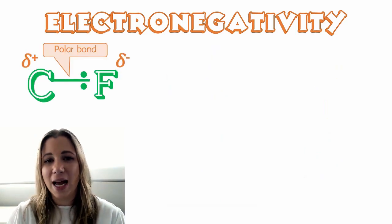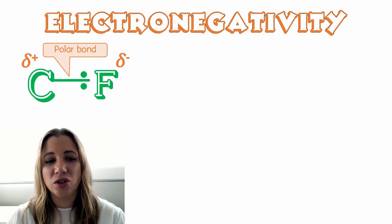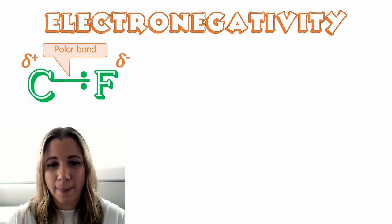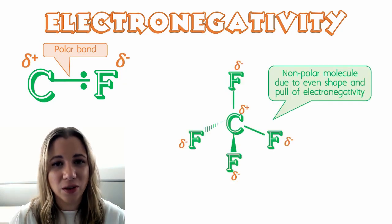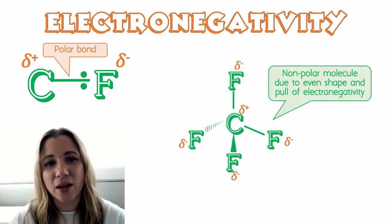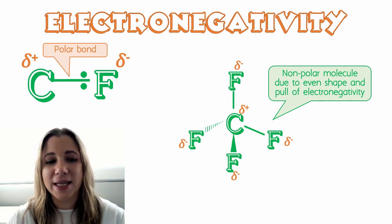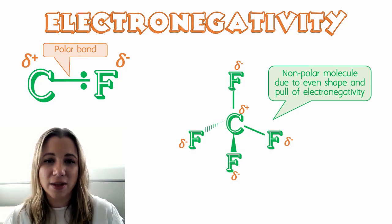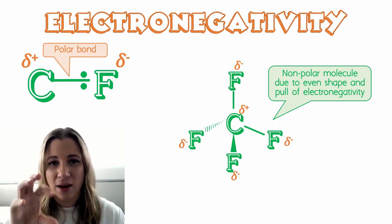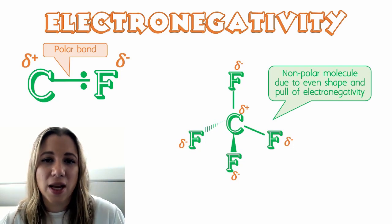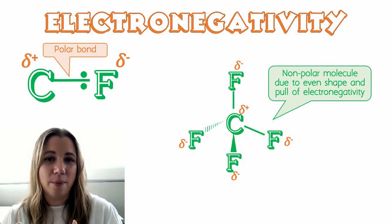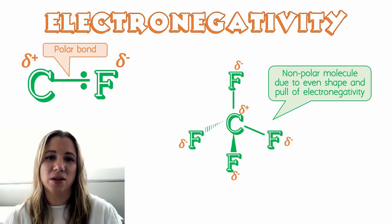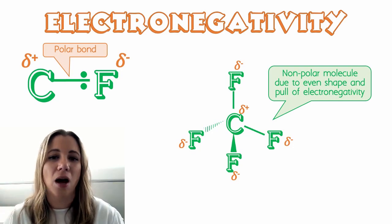For example, in a bond between carbon and fluorine here, fluorine pulls the shared electrons closer to itself because it is more electronegative. But the molecule carbon tetrafluoride is actually nonpolar. And this is because it has a tetrahedral shape, which means the fluorine atoms are pulled evenly around that carbon central atom. So even though each of those bonds individually are polar, the molecule itself is considered to be nonpolar because it's got an even pull around the molecule.